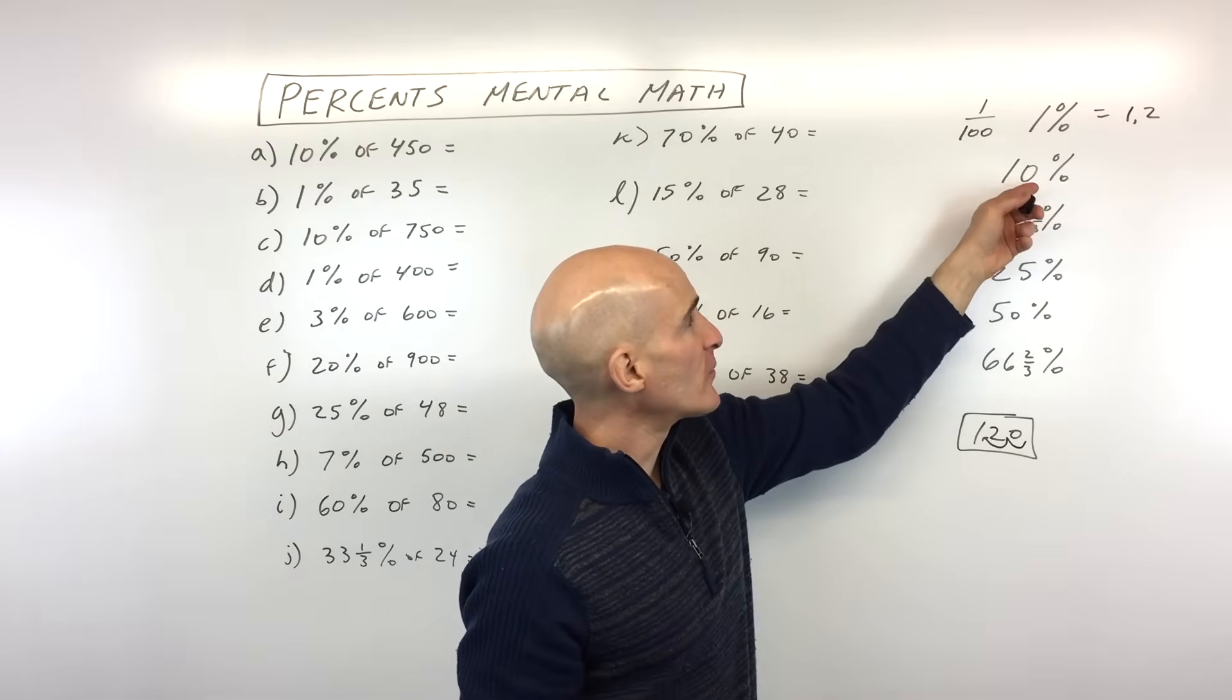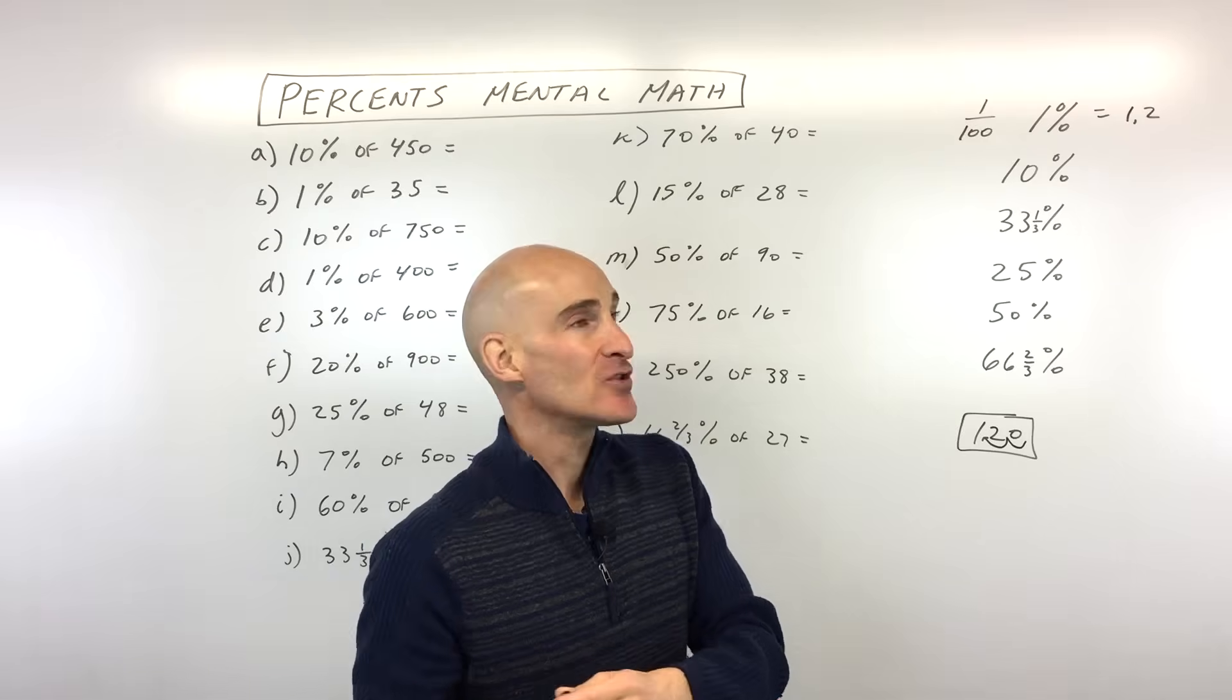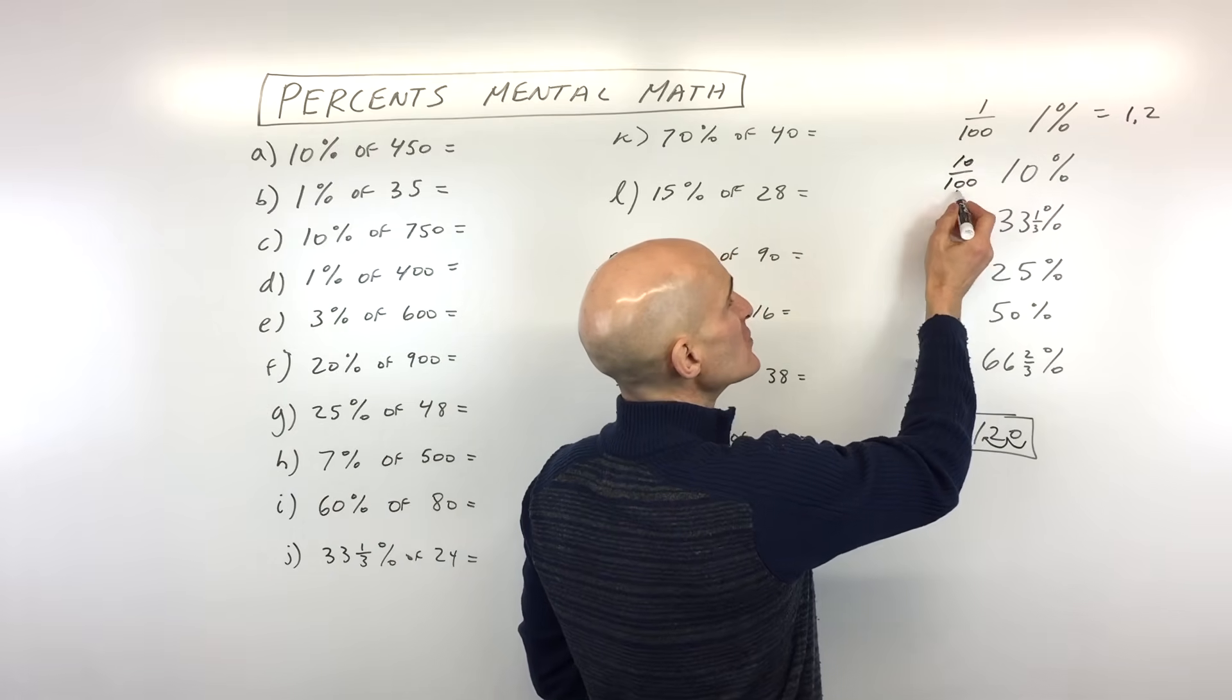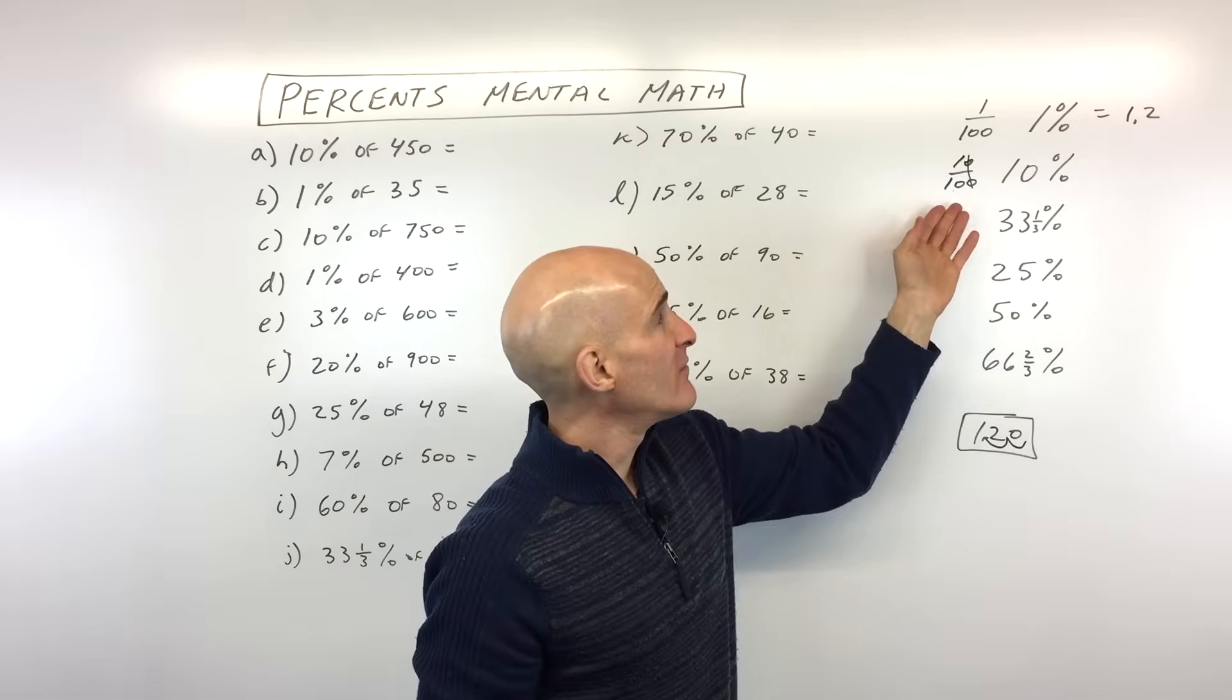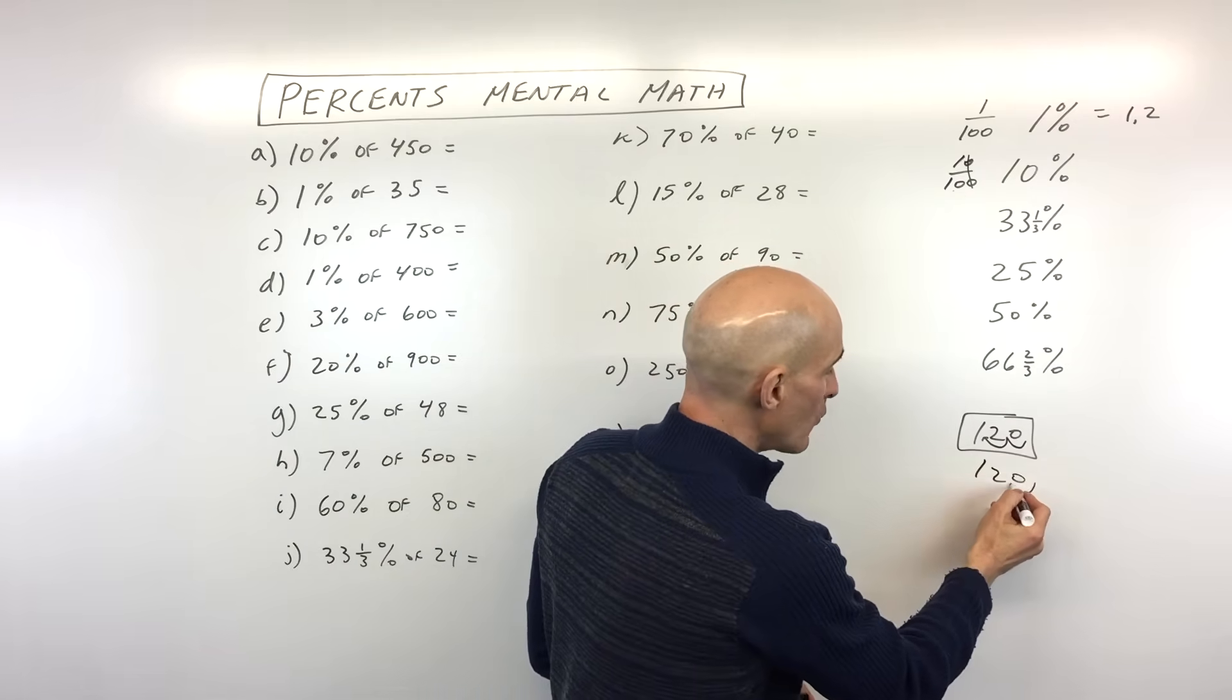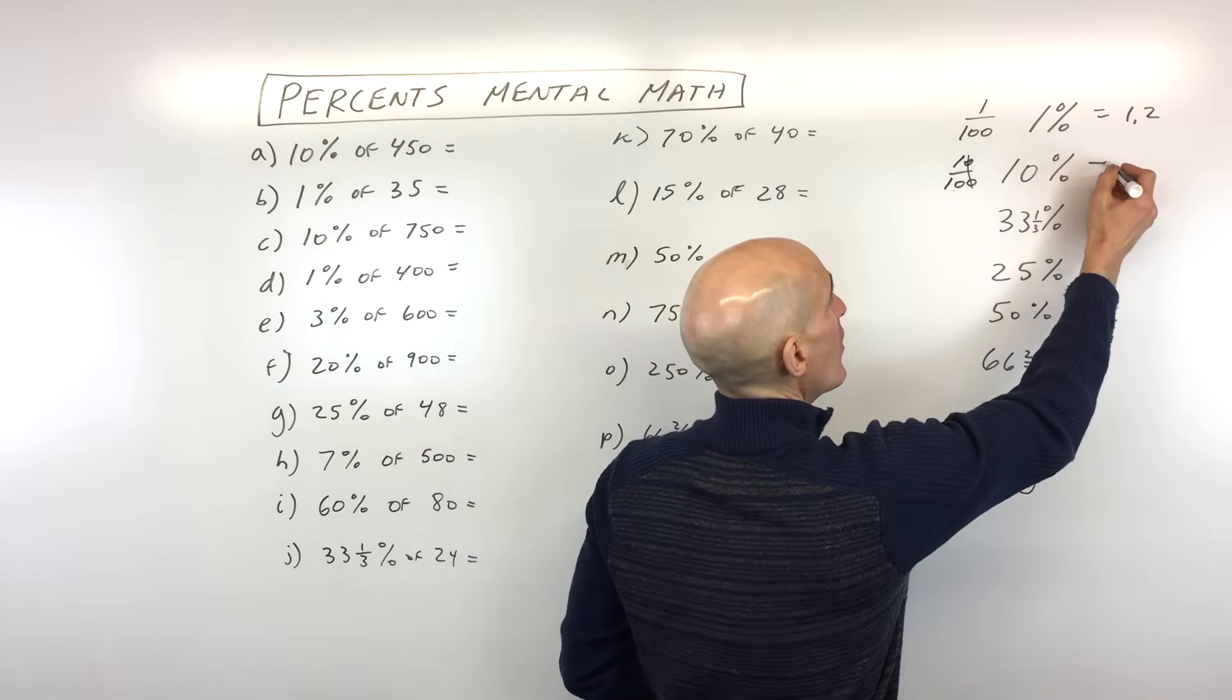Say, for example, they ask us though for 10%. Now again, remember, per cent, per means divided by. So per cent means 10 over 100. Now if we reduce this by dividing the numerator and denominator by 10, that reduces to one tenth. One tenth means we're dividing by 10. When we divide by 10, we just take that number and we just move the decimal one place to the left. So 10% of 120 would just be 12.